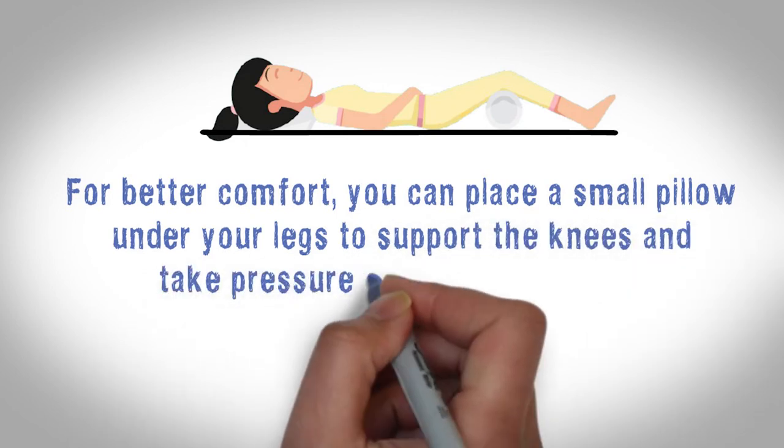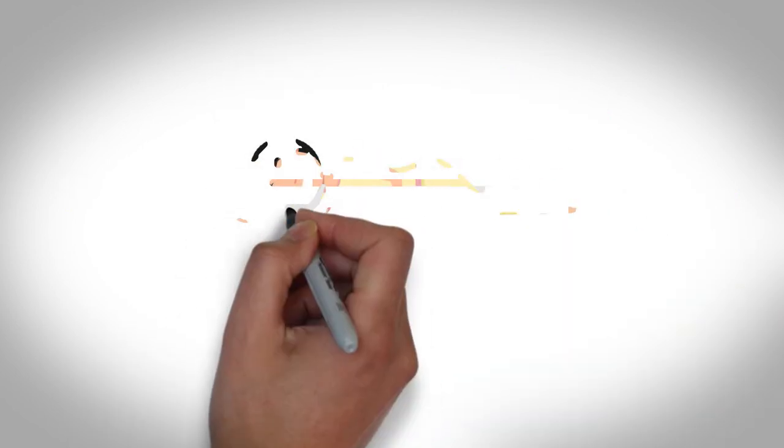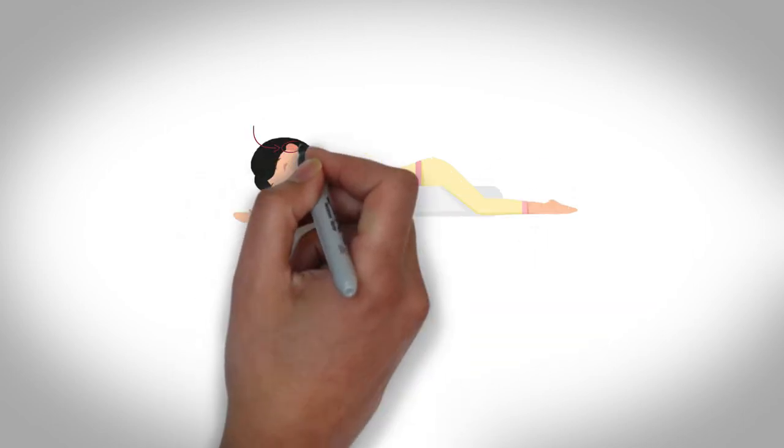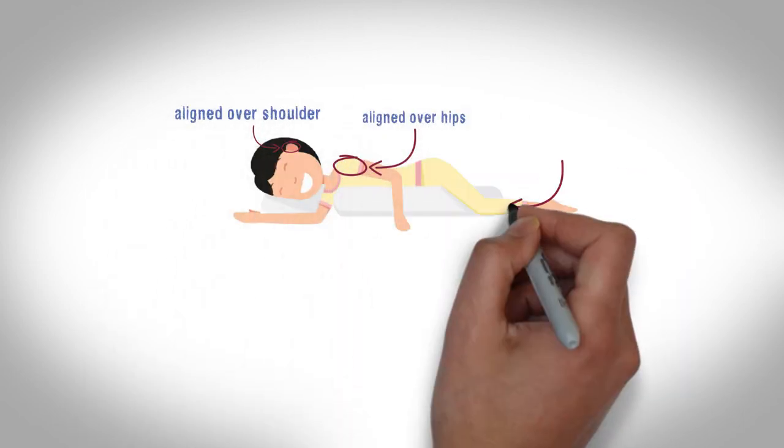While sleeping on your side, find a comfortable position where your ears are aligned over your shoulders, your shoulders are aligned over your hips, and your knees are slightly bent.